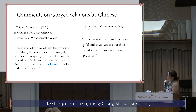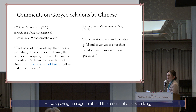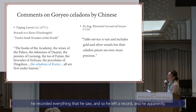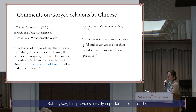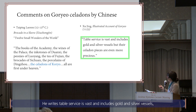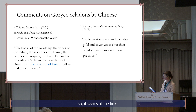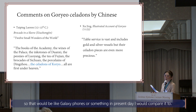The quote on the right is by Shu Qing, an emissary who visited Korea in the 12th century to attend the funeral of a passing king. While in Korea, he recorded everything he saw and apparently also left some illustrations, though those were lost. He was very impressed with the table service, writing: 'Table service is vast and includes gold and silver vessels, but their celadon pieces are even more precious.' It seems at the time we were able to impress the Chinese with our ceramics — comparable to Galaxy phones or something in the present day.